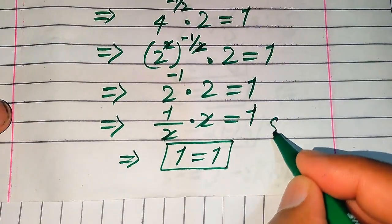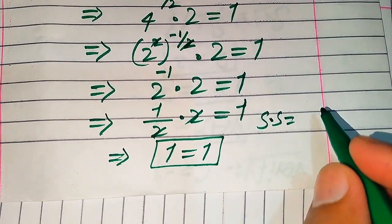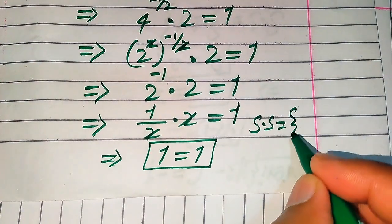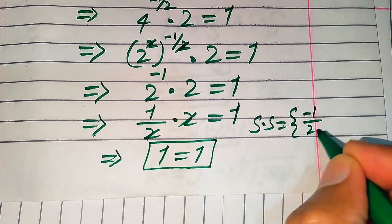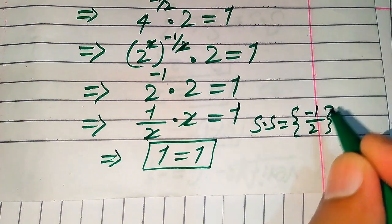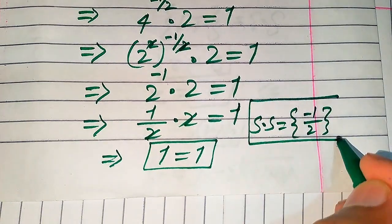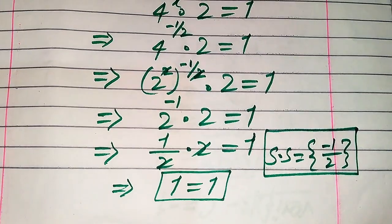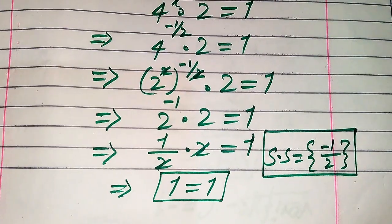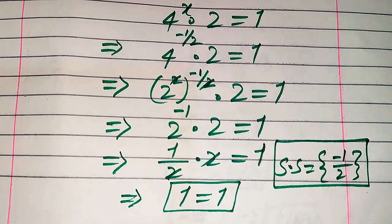Our final conclusion is that minus 1 over 2 is the solution of the given equation, and this is our final answer. Thank you so much for watching this video — please subscribe to my channel for more exciting videos.